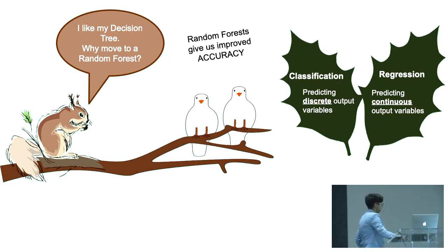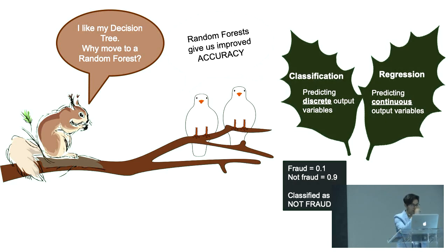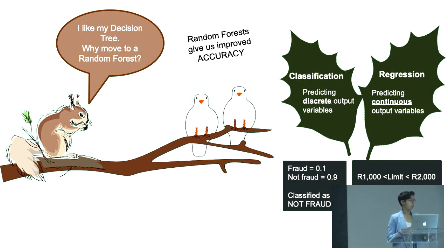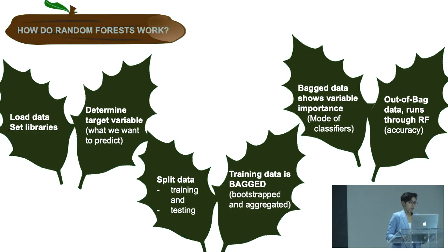The other nice thing about random forests is that they solve classification and regression problems. So that's really, is something fraud or not fraud? And if we're talking about giving people credit limits between a thousand or two thousand, what is the R squared associated with that and should we be giving that kind of credit out?